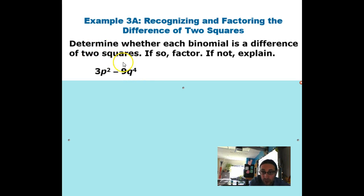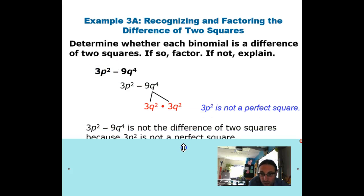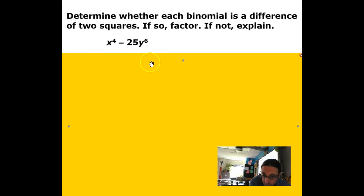All right, so hey, in this example, determine whether each binomial is a difference of two squares. If so, factor it. P's, wait, wait a minute. This is the difference of two squares, and nine is a perfect square. Q is to an even power, so I can do that. P is to an even power, but the three, no way, Jose. Since this three here, 3P squared is not a perfect square, it is not the difference of two squares.